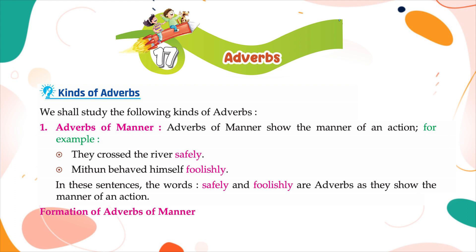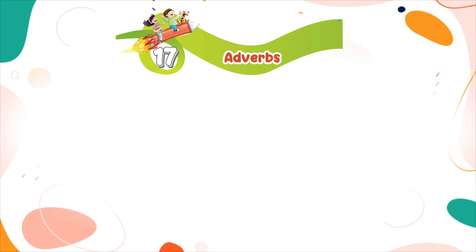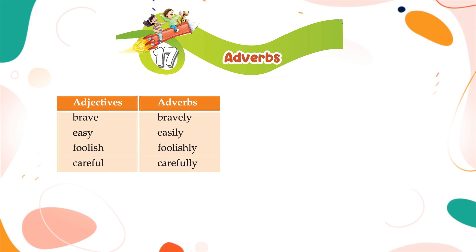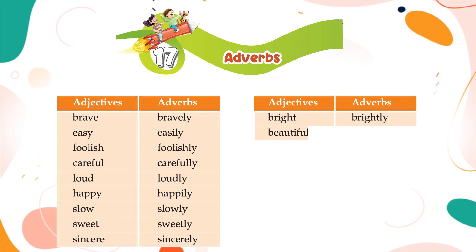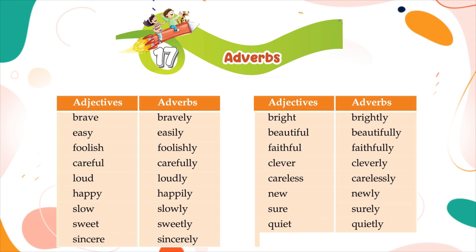Formation of adverbs of manner: many adverbs of manner are formed by adding '-ly' to adjectives. For example — Brave: bravely, Easy: easily, Foolish: foolishly, Careful: carefully, Loud: loudly, Happy: happily, Slow: slowly, Sweet: sweetly, Sincere: sincerely, Bright: brightly, Beautiful: beautifully, Faithful: faithfully, Clever: cleverly, Careless: carelessly, New: newly, Sure: surely, Quiet: quietly, Tight: tightly.